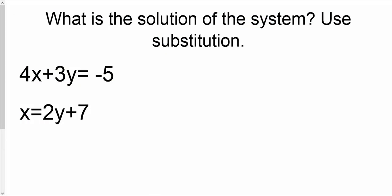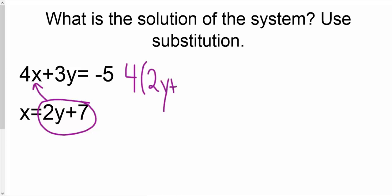Here's an example where we have it solved for x, and this is the exact same way we would do it with y. The only difference here is now we have an actual coefficient. Because it has x equals, I'm going to replace that x with 2y plus 7. I know this is a little bit tricky because we're used to solving for y and going from there, but in this case we're able to solve for x — it's already solved for us. So now I'm going to do 4 times the quantity 2y plus 7, replacing that x from the second equation. And then plus 3y equals negative 5.